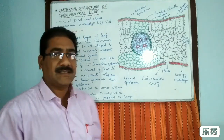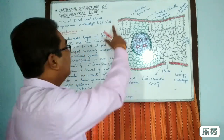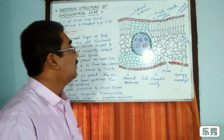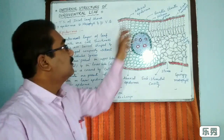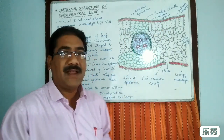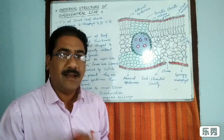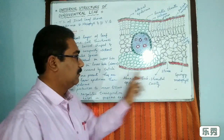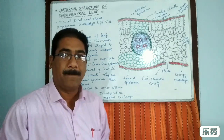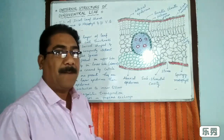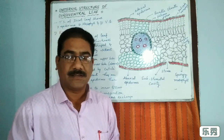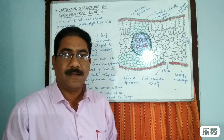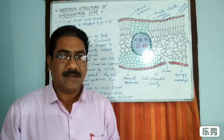Now we will discuss about epidermis. Epidermis is the outermost layer of the dicot leaf. Cells present in the epidermis are one cell in thickness — a single layer structure. The cells are barrel-shaped and arranged compactly without any intercellular spaces, similar to the dicot root.